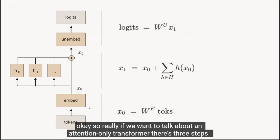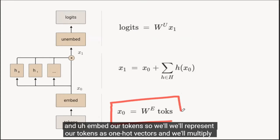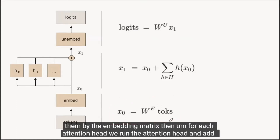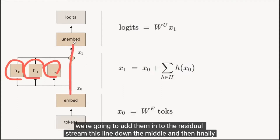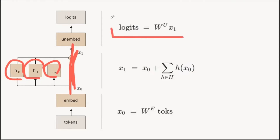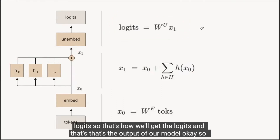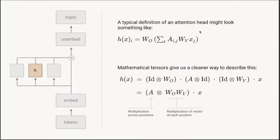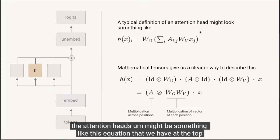At a high level, an attention-only transformer has three steps: embed the tokens by representing them as one-hot vectors and multiplying by the embedding matrix; for each attention head, run the attention head and add it into the residual stream; then multiply by the unembedding matrix to get the logits. To actually understand the model, we need to dive into the attention heads in more detail.